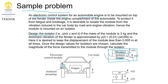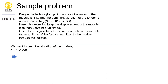The task is to design the isolator — to pick suitable values of c and k. Known to us: the mass of the module is 3 kg, and the dominant vibration of the fender is approximated by a given equation, from which we get the amplitude Y and omega. It is desired to keep the displacement of the module, X, less than 0.005 meters at all times. We also need to calculate the magnitude of the force transmitted to the module through the isolator.